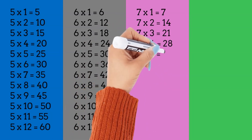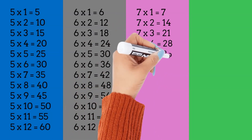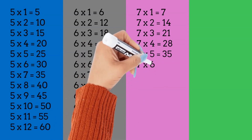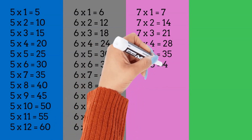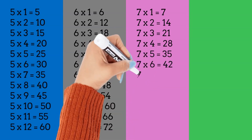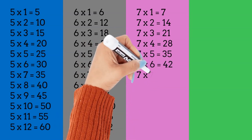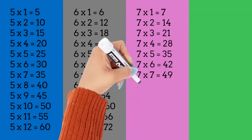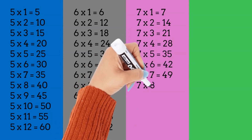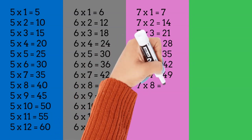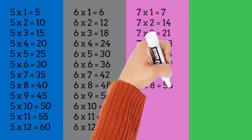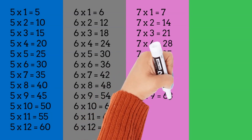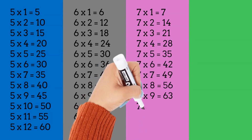7 times 5 is equal to 35. 7 times 6 is equal to 42. 7 times 7 is equal to 49. 7 times 8 is equal to 56. 7 times 9 is equal to 63.